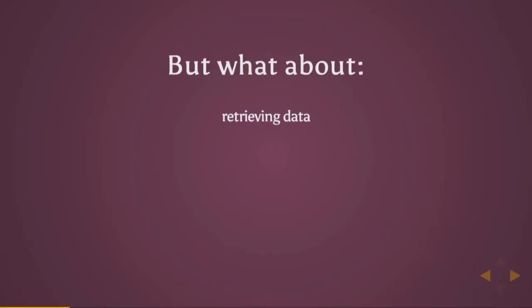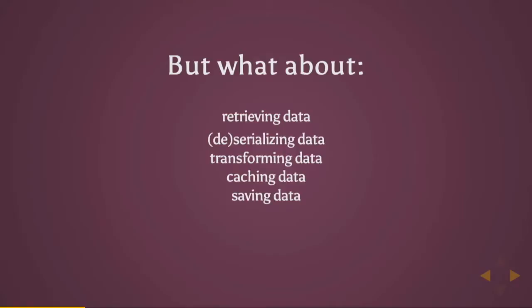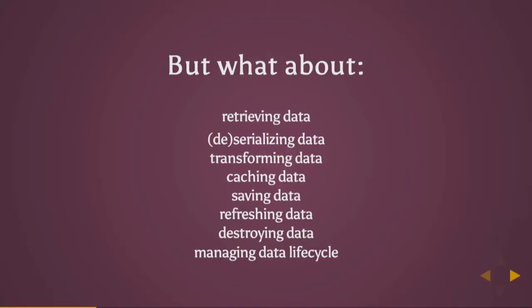But scope is limited in that it doesn't handle things like retrieving your data from various data sources — your RESTful API, IndexDB, wherever you're getting it from. Deserializing it — you might have some custom response object with standard response codes. You need to pull that POJO out of that response object. Transforming the data, caching it, saving data once you've made changes, refreshing data, destroying data — just overall managing the lifecycle of your models as they go back and forth between the browser and the server.